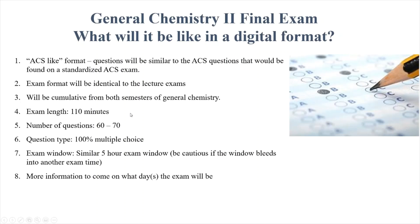The exam is going to be 110 minutes long, which is the standard ACS length. We're doing that because you're used to it from last year. To cut you a little bit of slack: normally the ACS exam would be 70 questions, but to give you more time to manage the online format, we're reducing the total questions from 70 down to somewhere in the 60s — probably somewhere in the middle. That gives you a little more time per question. The question type is going to be 100% multiple choice, so you won't have to deal with any numeric input.